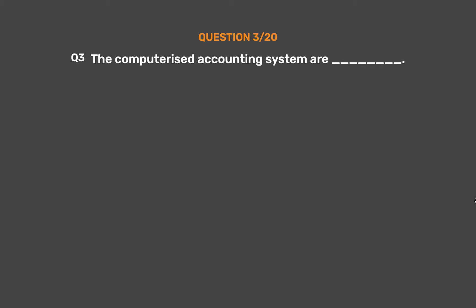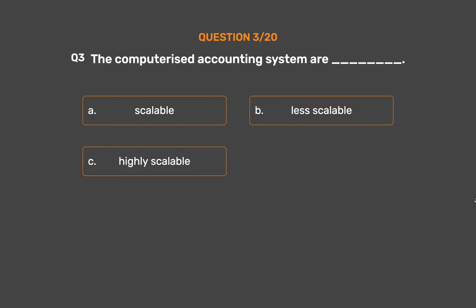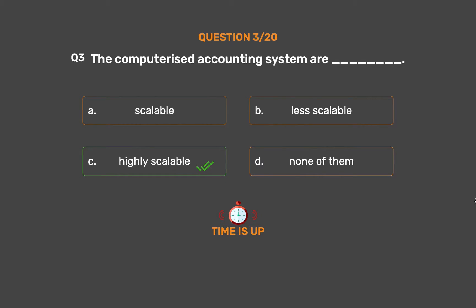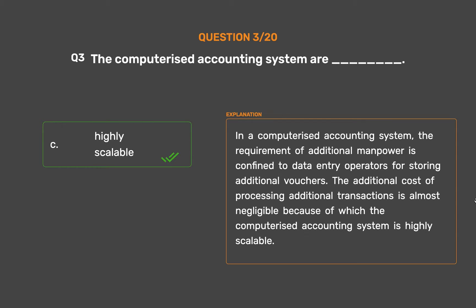Question number 3. The computerized accounting systems are underscore. Option A: Scalable. Option B: Less scalable. Option C: Highly scalable. Option D: None of them. The correct answer is Option C — Highly scalable. In a computerized accounting system, the requirement of additional manpower is confined to data entry operators for storing additional vouchers. The additional cost of processing additional transactions is almost negligible, because of which the computerized accounting system is highly scalable.